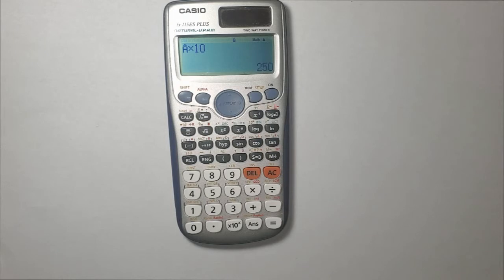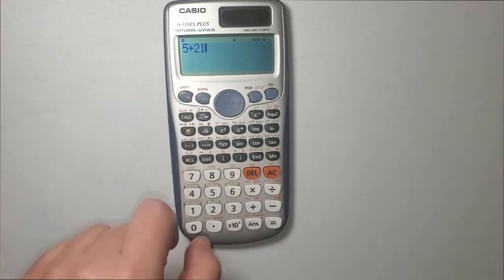Now you can have values stored to each of these variables using this feature. Next example. Let's say we have 5 plus 21 and I want to store the result of this calculation under the variable B. I go shift RCL and then B, and here it is, 26 under the variable B.